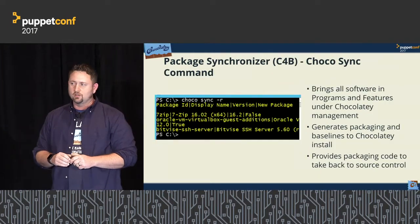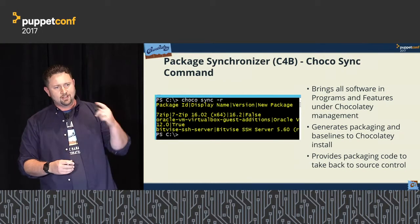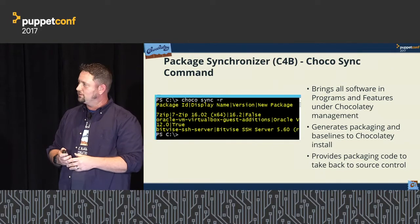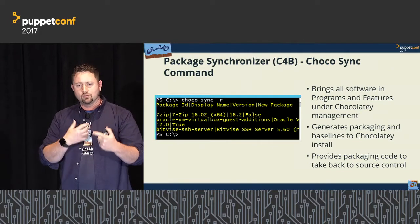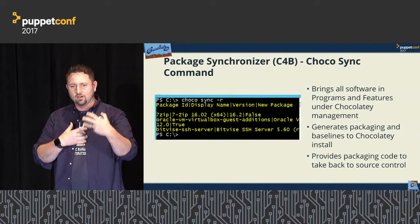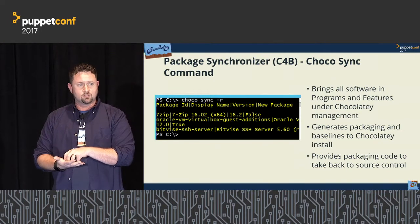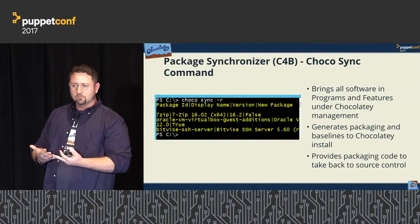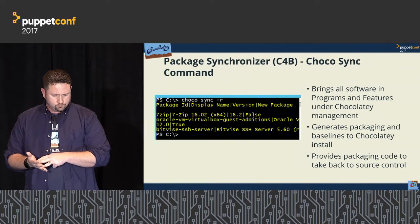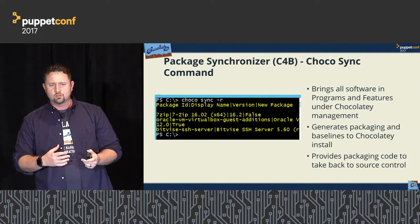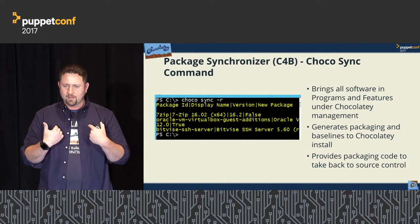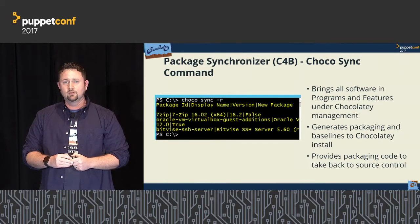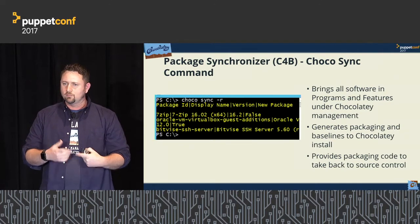The Choco Sync command — new since the last PuppetConf — looks at all the software not being managed on a machine, goes through all those uninstaller keys, and automatically generates packaging on the fly, right on the box. It brings everything under Chocolatey management quickly. In the future, with package indexes, it will look back at your sources and check if something like 7-zip 16.2 already exists there before falling back to generation.